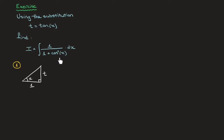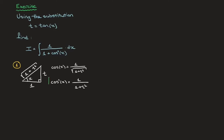To find cosine of x and therefore cosine squared of x, we need the hypotenuse. Using Pythagoras's theorem, the hypotenuse is the square root of 1 squared plus t squared, i.e. √(1+t²). Since cosine of x equals the adjacent over the hypotenuse, cosine of x equals 1 over √(1+t²). Cosine squared of x is therefore 1 over 1 plus t squared, and we've rewritten cosine squared of x in terms of t.